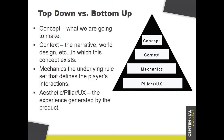Concept is what we're trying to make — the design goal, what we're aiming for, our finished product. Context is the underlying lore: what your idea is based in, the narrative, the world design. Mechanics are the underlying rule set, the underlying structure that allows players to interact with your game. And finally, aesthetic/pillar/UX — there are lots of different words for this — it's the experience that your player is going to have with your product.